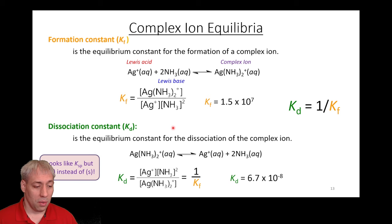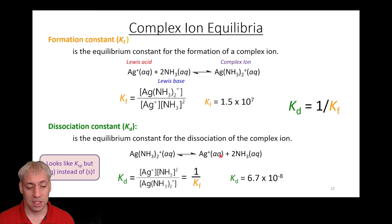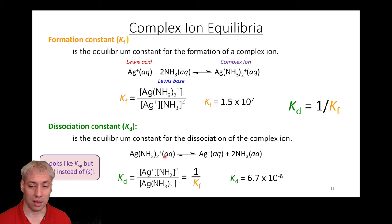One important note: the Kd equation — complex ion dissociating into Ag-plus and NH3 — looks similar to a Ksp equation. The big difference is that this is a soluble species. If there were a solid indicated, this would effectively be a Ksp equation. This is not a solid — this is a complex ion. Don't mix up Kd and Ksp: they look similar, but the difference is solid versus aqueous species.